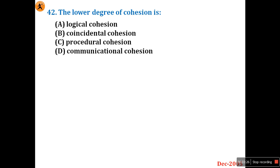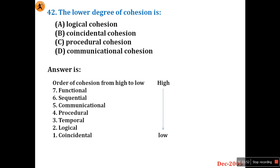Question 42: The lower degree of cohesion is — logical, coincidental, procedural, or communicational cohesion? As explained in previous videos about coupling, today same for cohesion: the order from high to low degree is — functional, sequential, communicational, procedural, temporal, logical, coincidental. So the lower degree is coincidental, answer B.